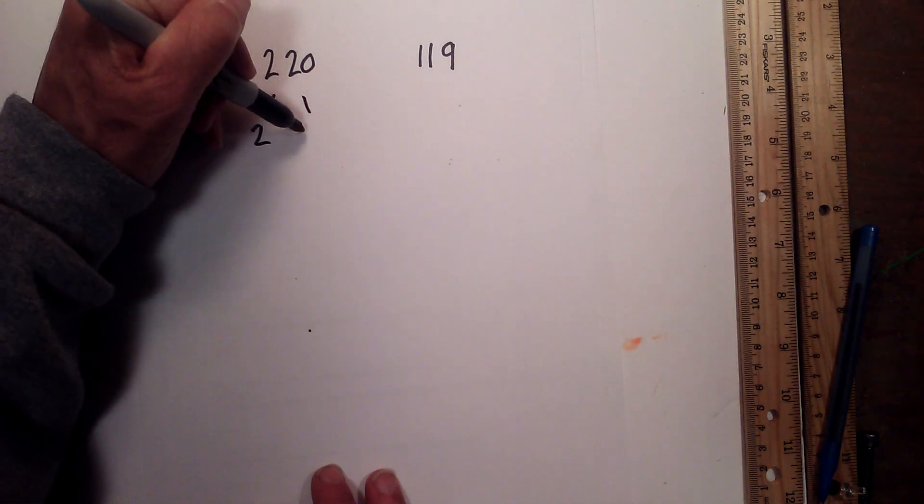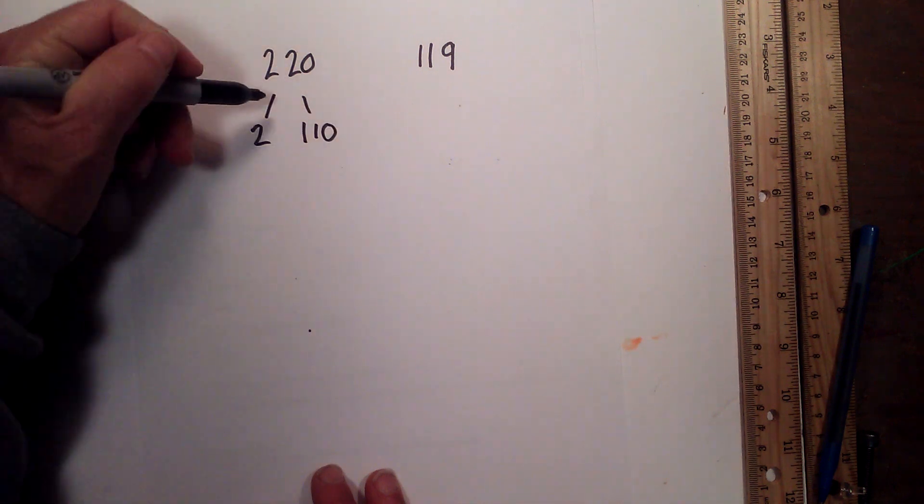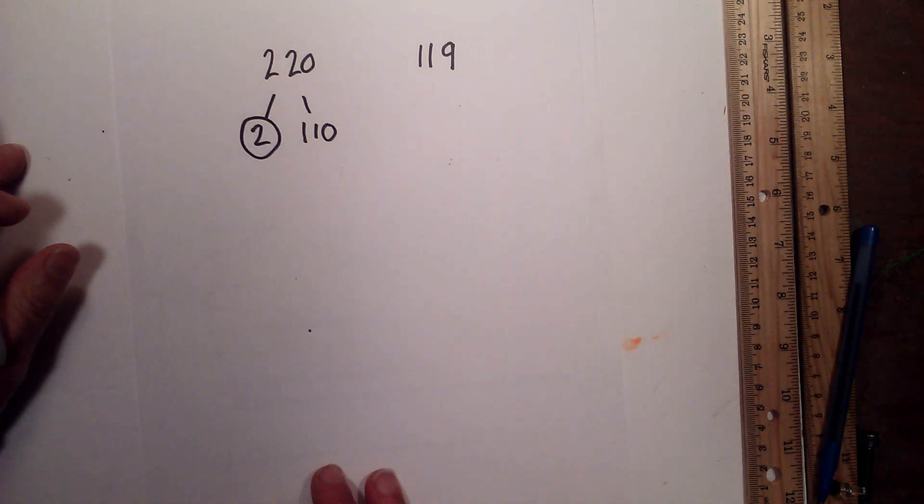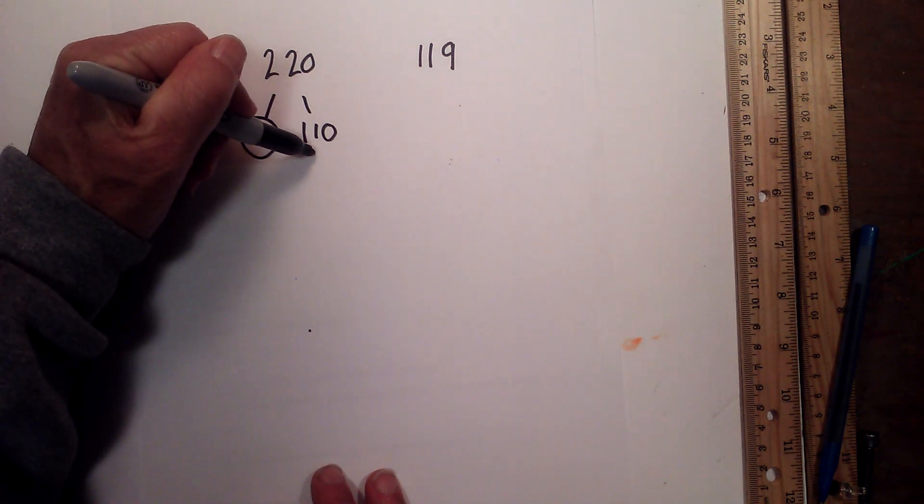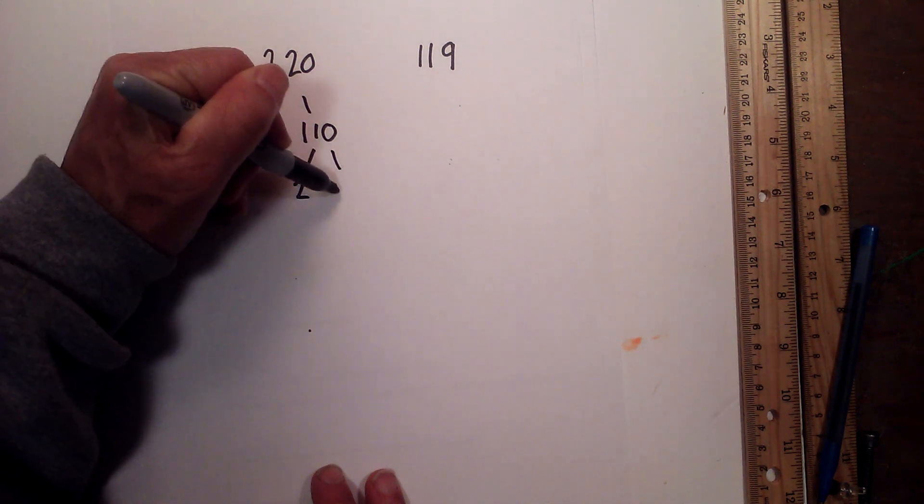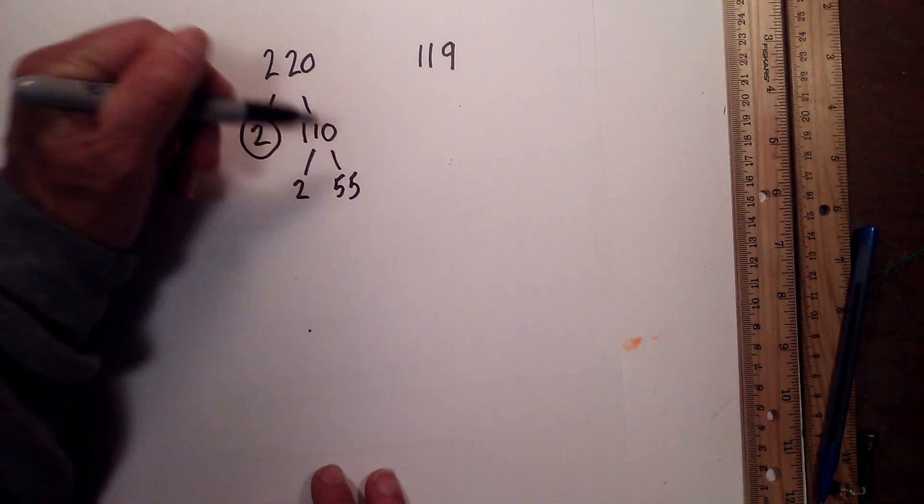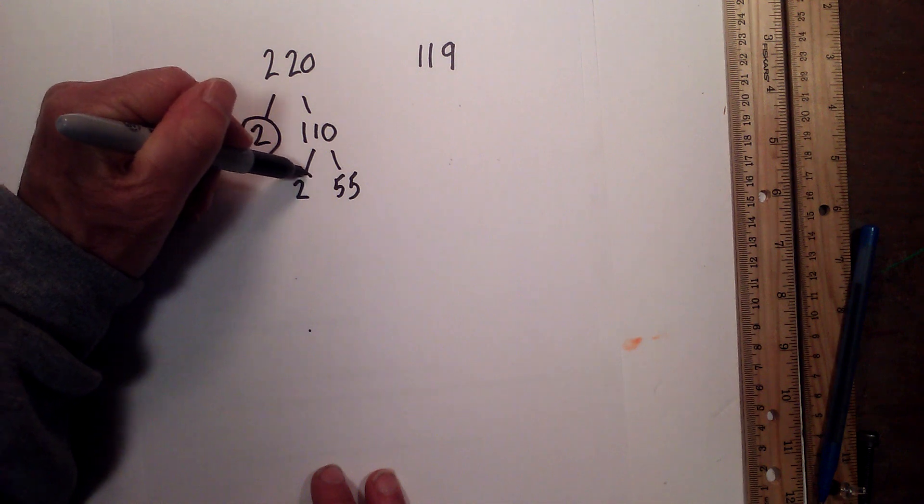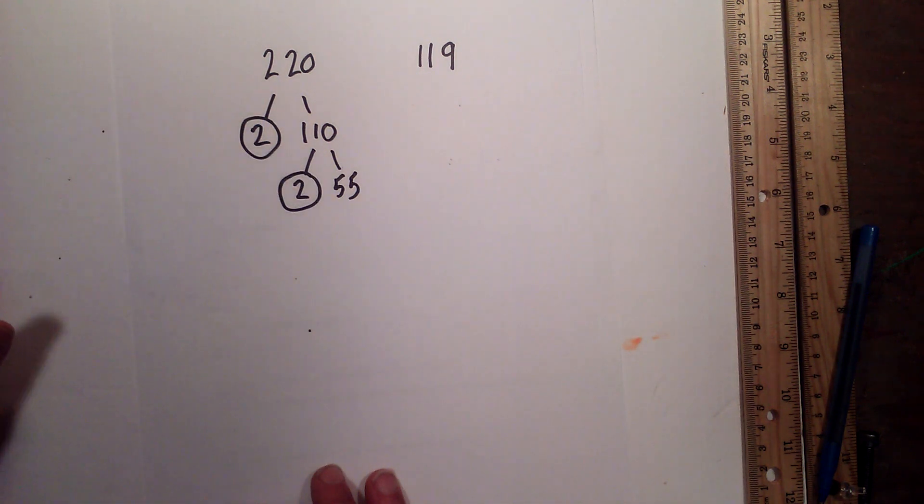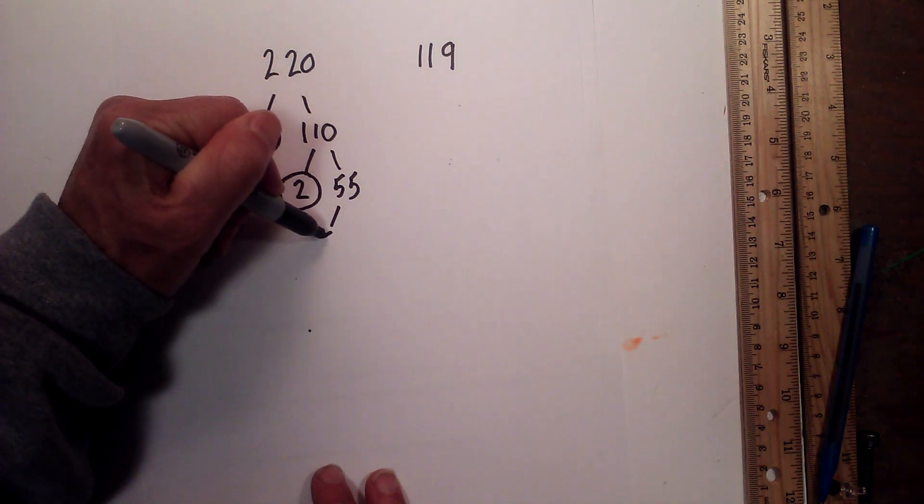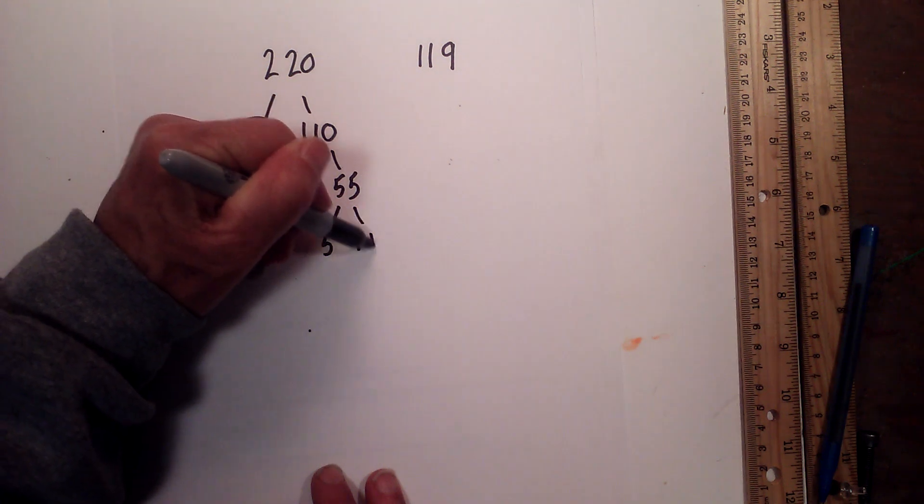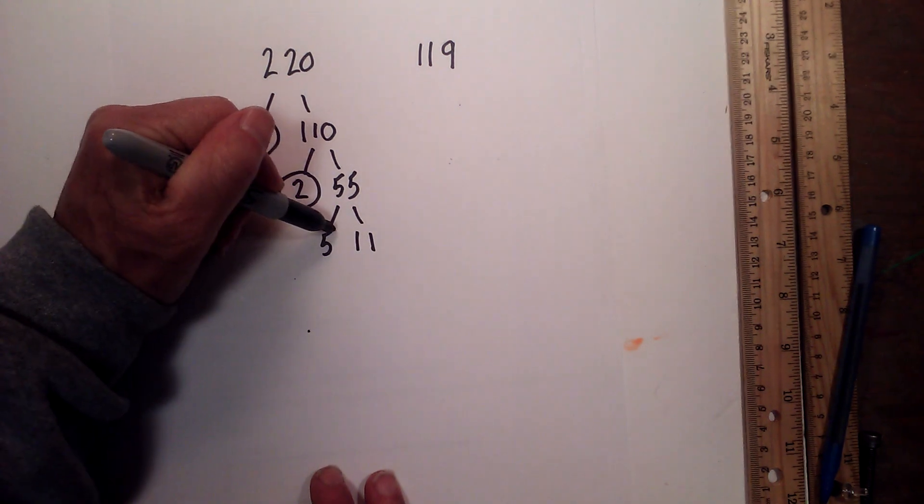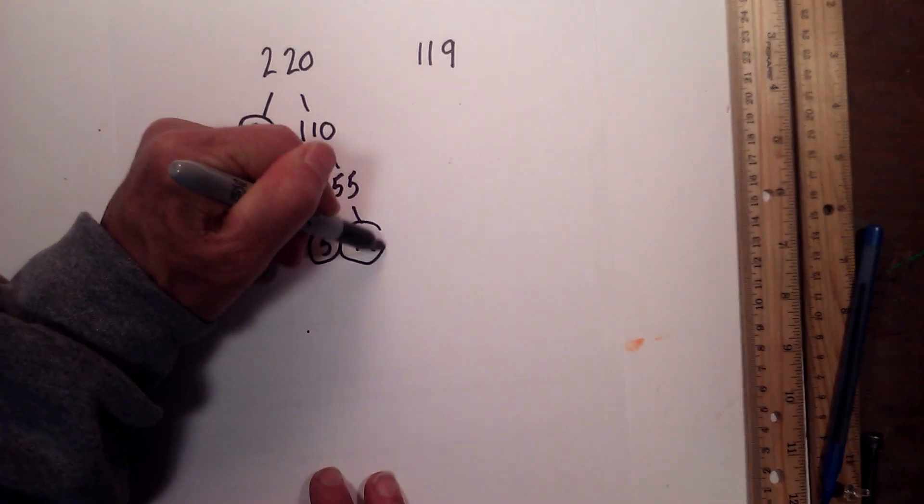First, 2 times 110 equals 220. I will circle the 2 because it is prime. Now 2 times 55 equals 110. I will circle the 2 because it is prime. And now 5 times 11 equals 55. I will circle both of them because they are prime.